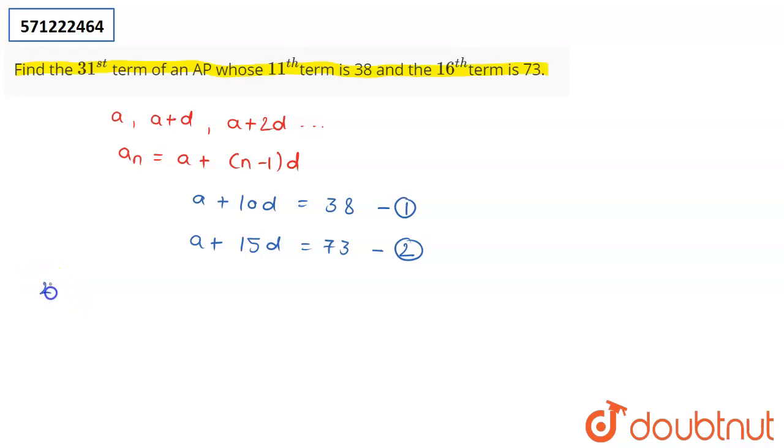Now, what you have to do is you have to subtract the first equation from the second equation. So you get 5d is equal to 35. From here, you can conclude that the value of d is going to be 7.